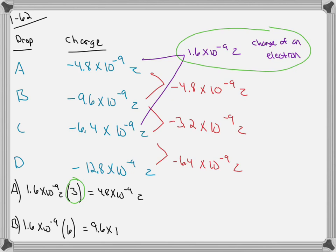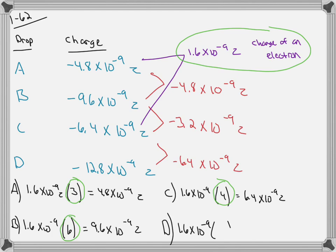For the next one, we need to multiply the charge by 6 to get the total charge. So it has 6 electrons. And for C, we need to multiply 1.6 times 10 to the negative 9 by 4 to get the total charge of 6.4 times 10 to the negative 9 zorgs. So there's 4 electrons.